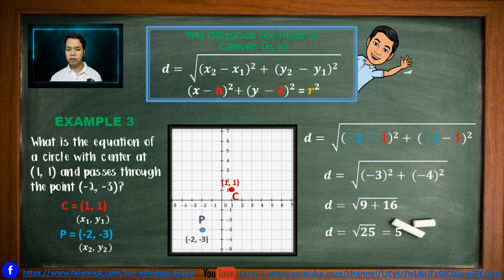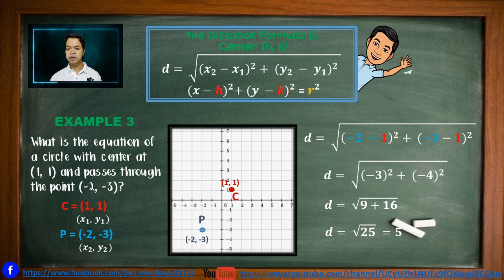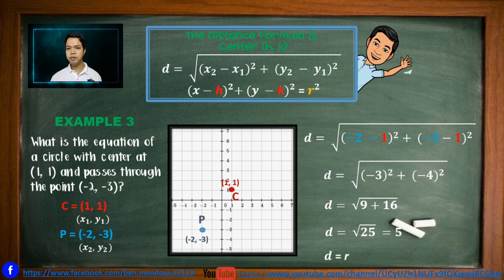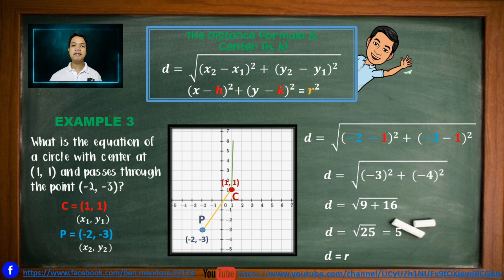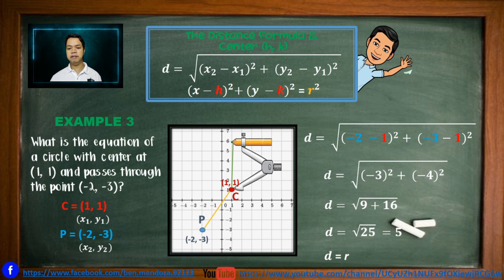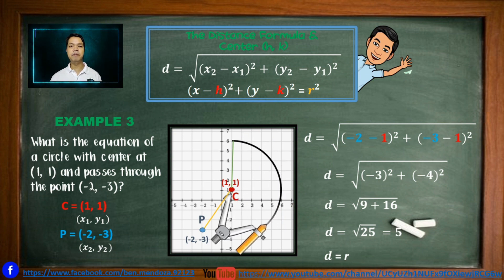So now we know the distance between the center and point P on the circle is exactly 5 units. Since that is the distance from the center to a point on the circle, it is considered the radius — so D is equal to R. To draw the circle, since we already have the radius of length 5 with center at (1, 1), we can draw the circle for example number 3.